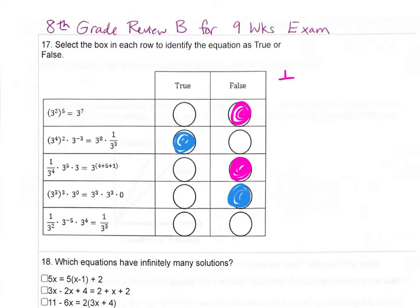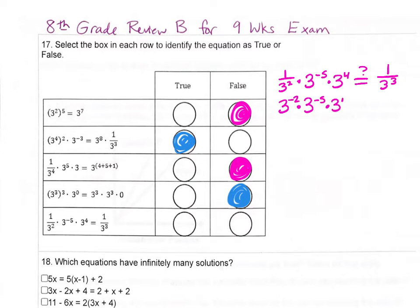Our last one: we have 1 over 3 squared times 3 to the negative 5th power times 3 to the 4th power. We want to see if it's equal to 1 over 3 to the 3rd power. We have 3 to the negative 2nd power because to change our exponent sign we cross a fraction line. Multiplying like bases, we add the exponents and get 3 to the negative 3rd power. That equals 1 over 3 to the 3rd, so these are equal — this one is true.